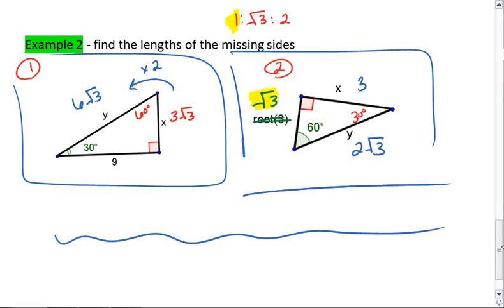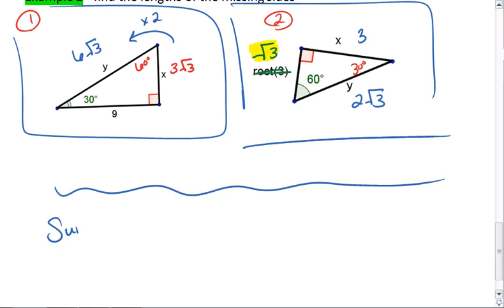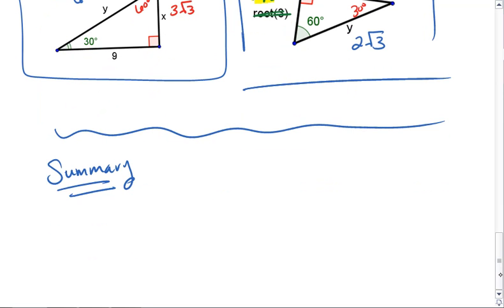So, quick summary here. Our two special triangles are our 45-45-90 triangle and our 30-60-90 triangle.